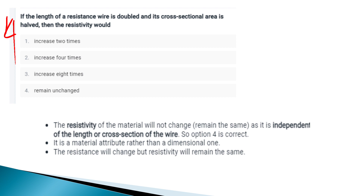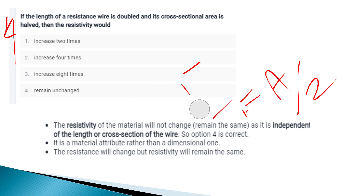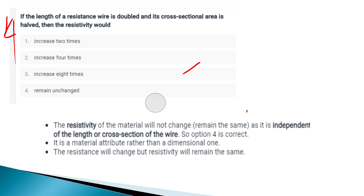14th question: the length of a resistance wire is doubled and the cross-sectional area is halved. What is the resistivity of the material? The resistivity of the material depends only on the material itself — it will not change if we change the length or area. The resistivity remains unchanged.